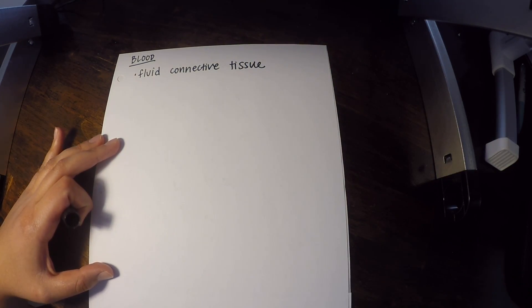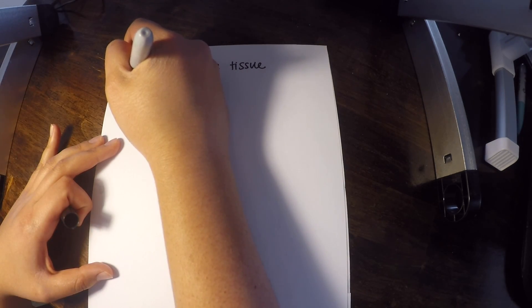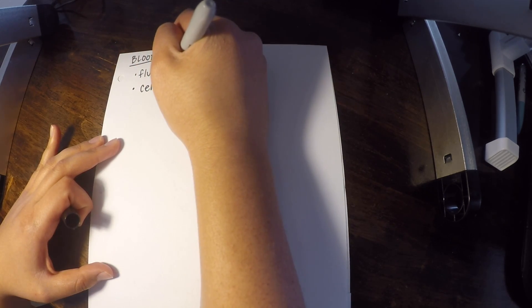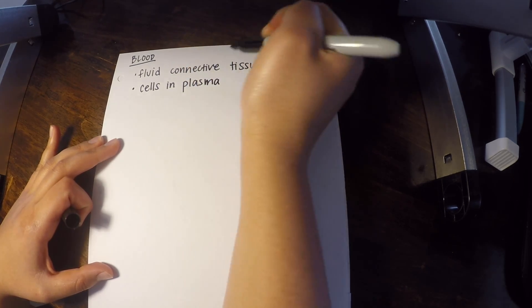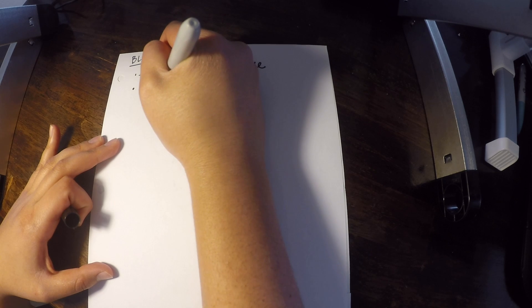Alright, so when we think about blood, we really have to think about it as a bunch of different types of cells floating in something called plasma, which is like the fluid that they're floating in. So it's cells in plasma. And essentially this forms a liquid matrix.